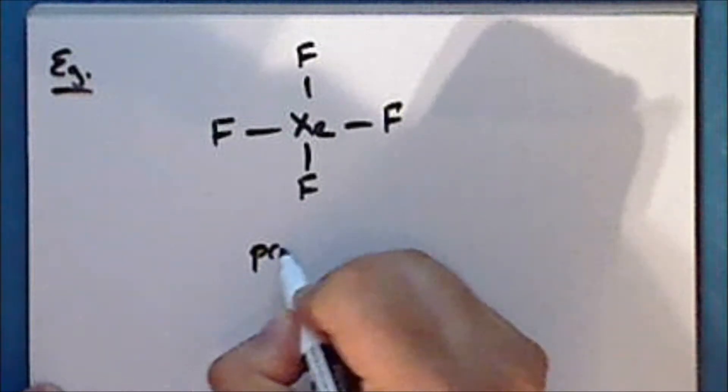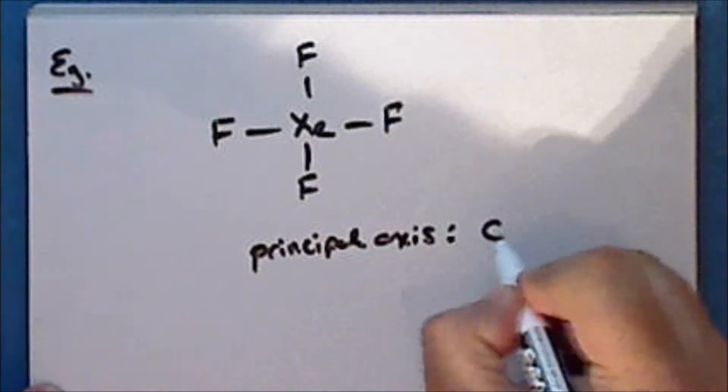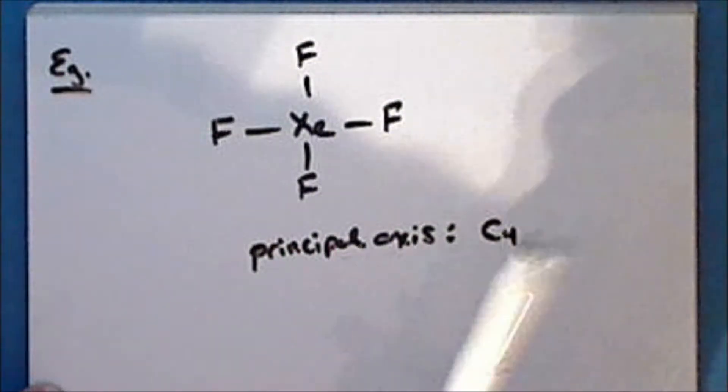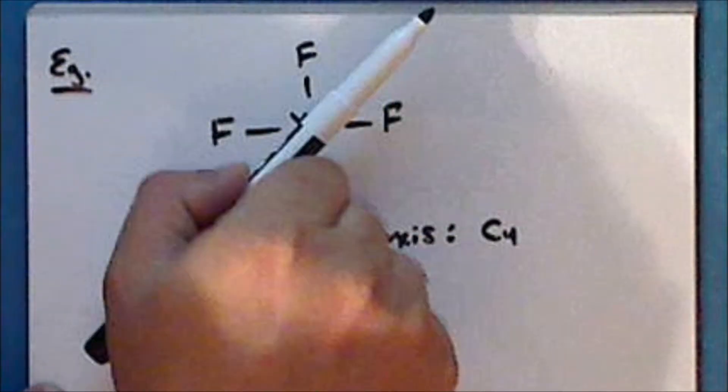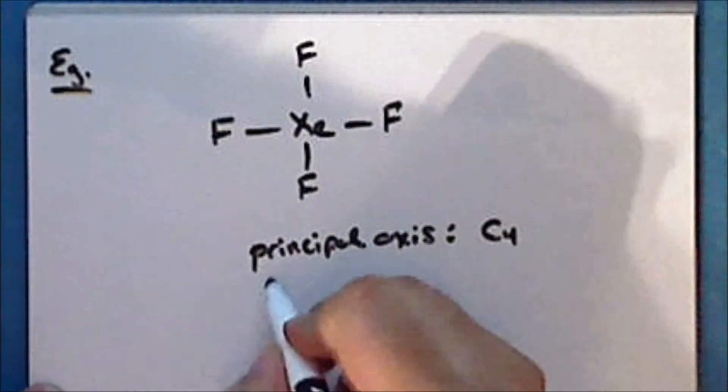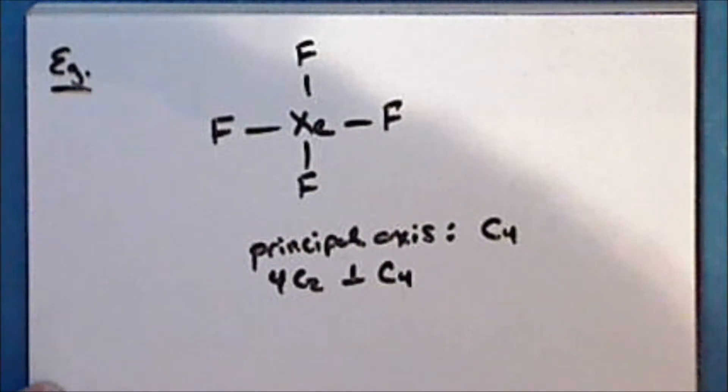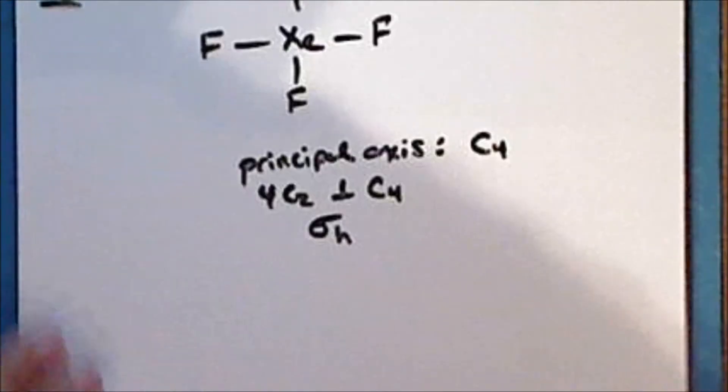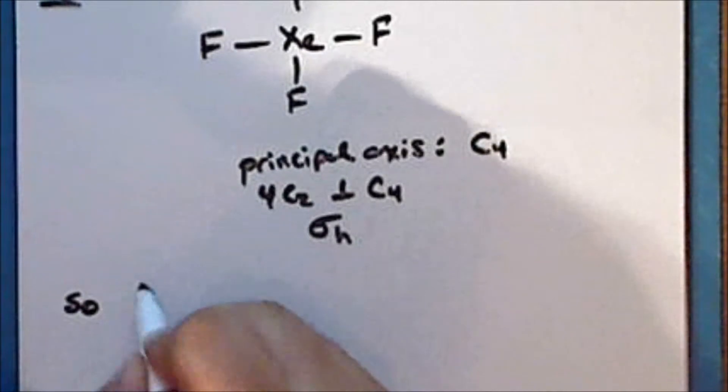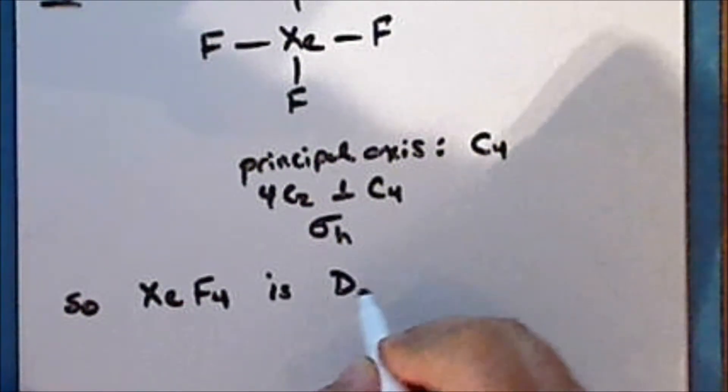The principal axis is a C4 axis. And there are one, two, three, four C2 axes that are perpendicular to this axis. And the plane of the molecule itself is a horizontal mirror plane. And so xenon tetrafluoride is in the D4H point group.